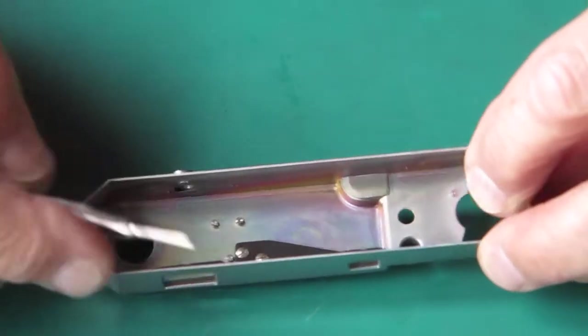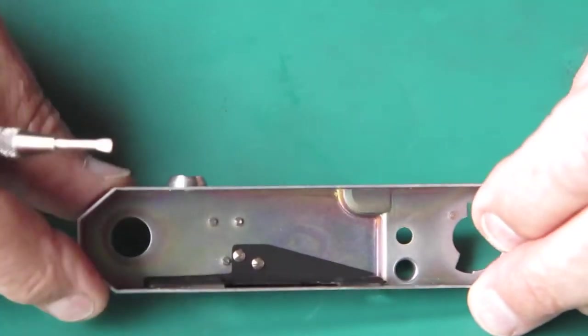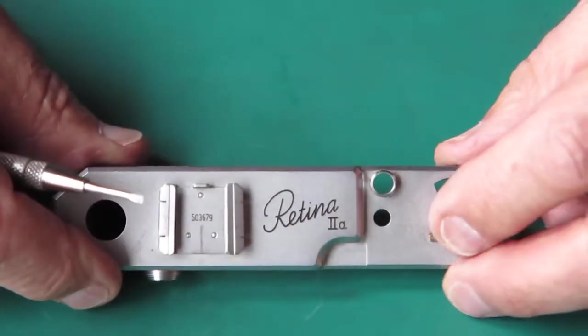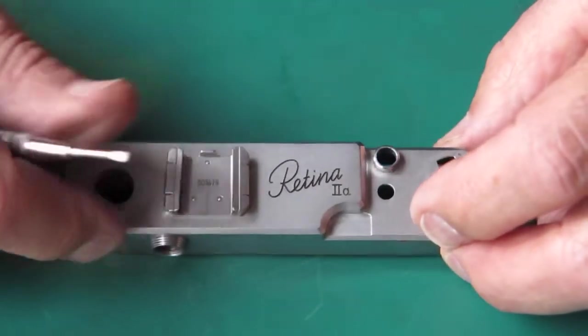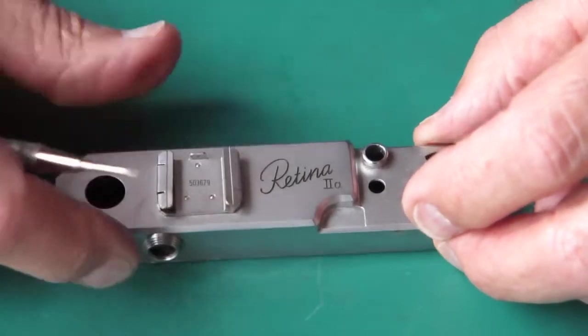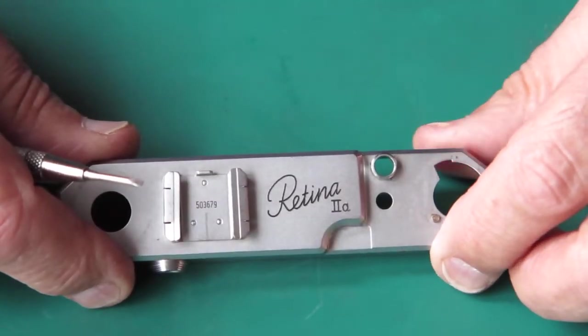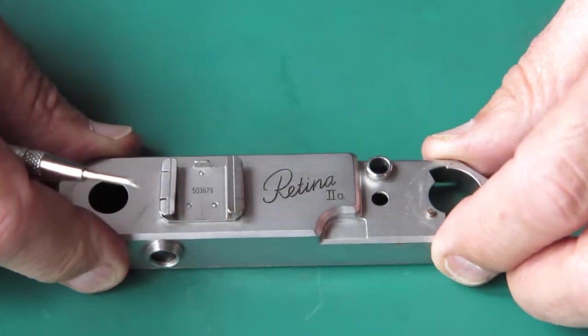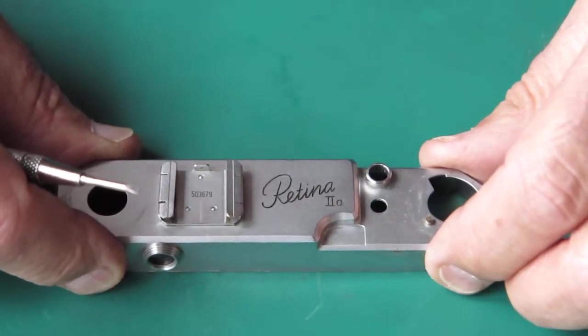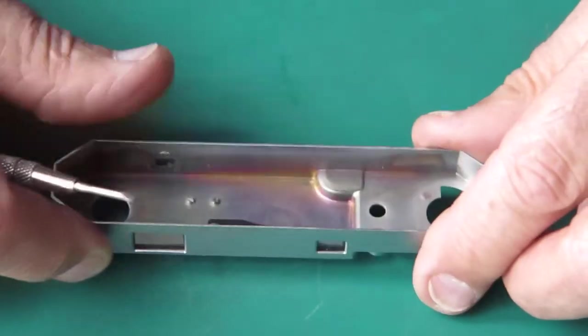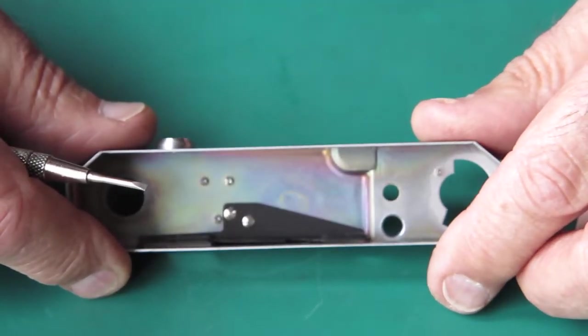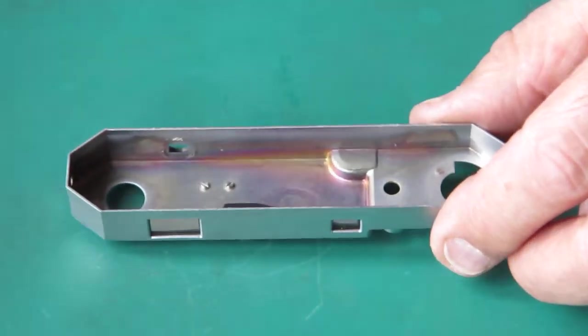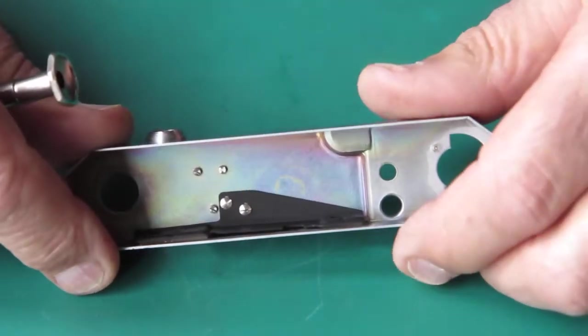And these three screws, or even one at a time, can fall out and rattle around inside the camera. And on multiple occasions, I have found them jamming the works, getting down in the film advance mechanism and locking the camera up. On more than one occasion, I've discovered where gears have been broken because the screw has got down there and someone has forced the film advance lever and, in the process, broken the gear.